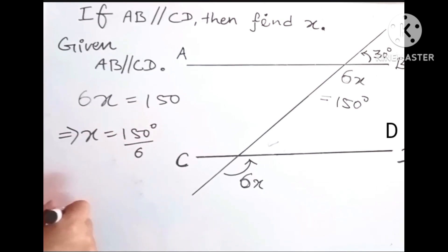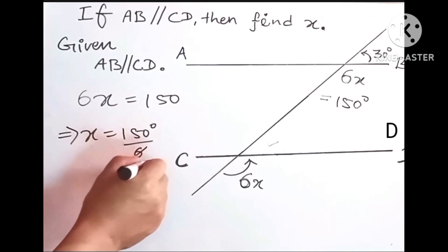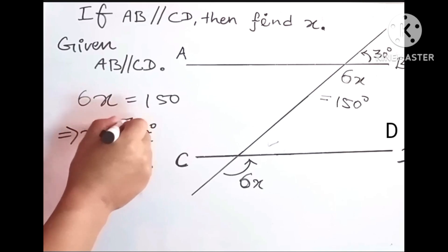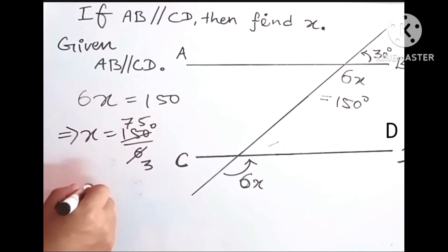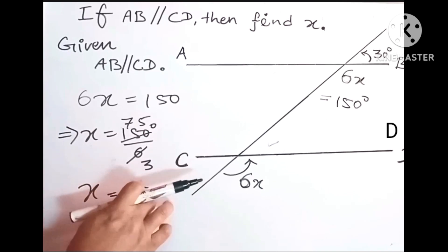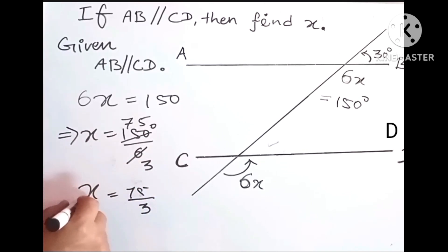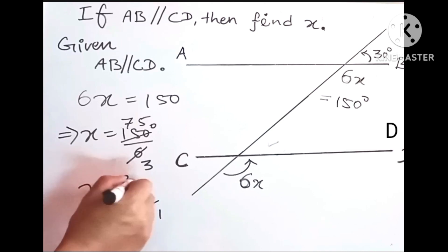We can cancel out this 75 and 3 because 3 times 25 is 75.